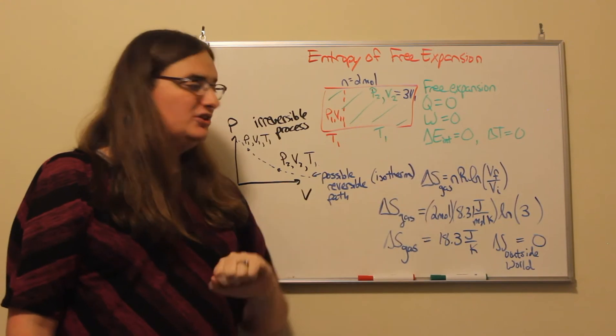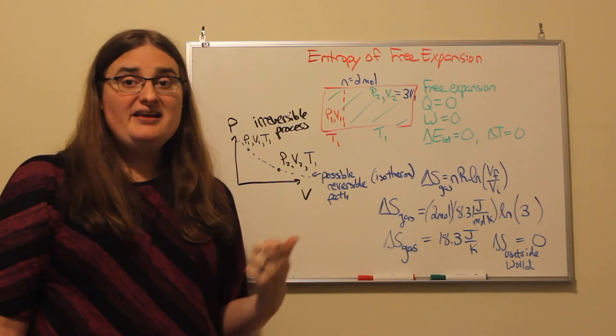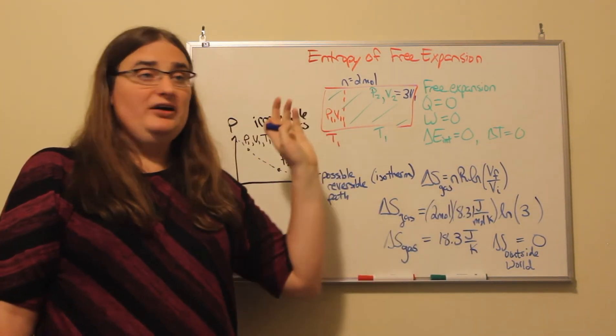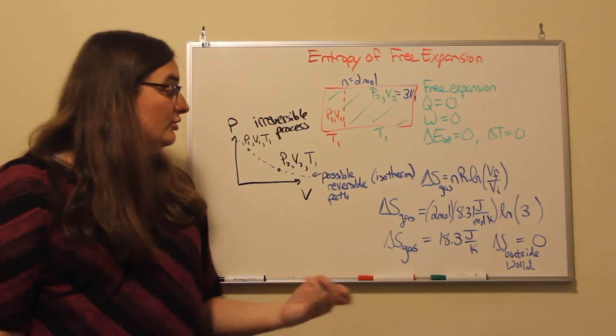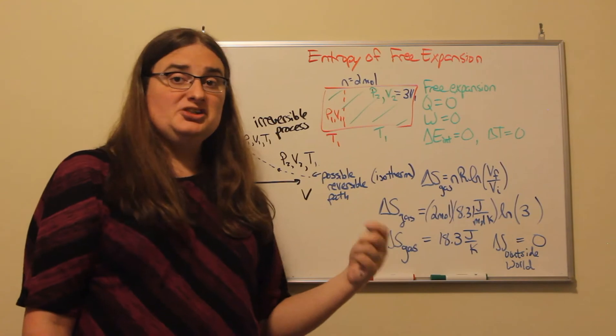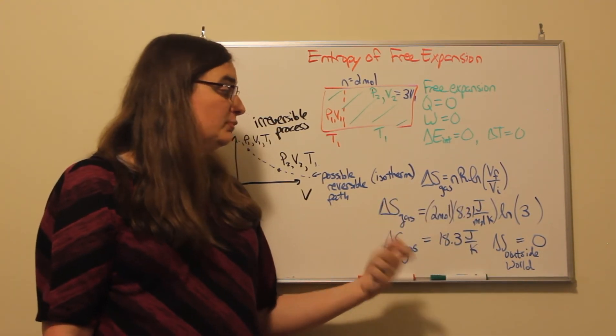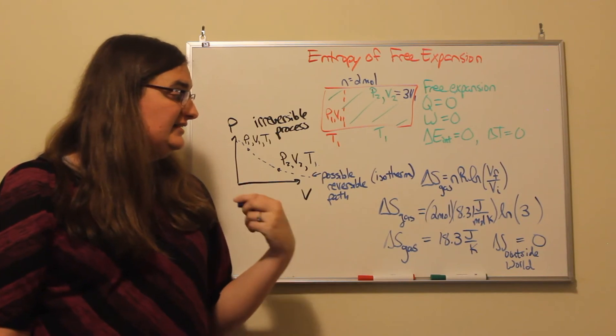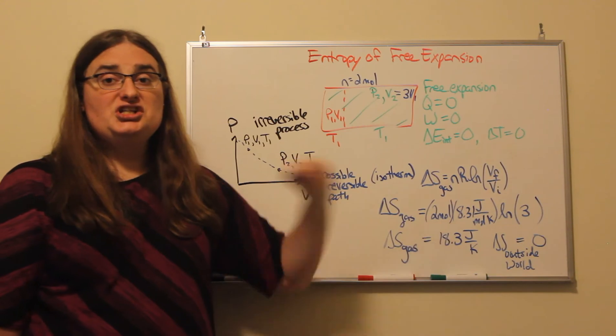For an isotherm, the change in entropy is the number of moles times the universal gas constant, 8.31 joules per mole kelvin, times the natural log of V2/V1, which would be the natural log of 3, giving a change in entropy of 18.3 joules per kelvin. That is the change in entropy of the gas.